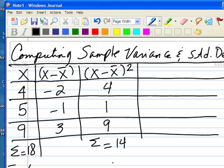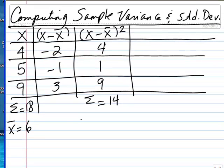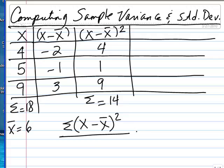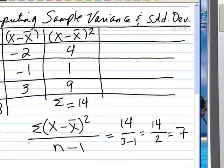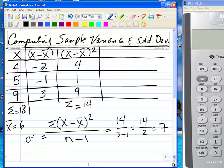Computing the sample variance involves taking the squared differences, summing them up — which is what we have done — and dividing by n minus 1. Now in this example, n is 3, so it will be 14 divided by 3 minus 1, which is 14 divided by 2, which is 7. This is sample variance, s squared.